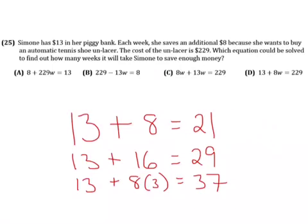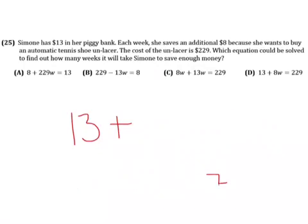But we want an equation that can figure out how long will it be until she gets up to $229. So, we need to multiply something by W, the number of weeks. And because she's saving $8 every week, we need to multiply the weeks by 8.